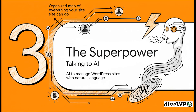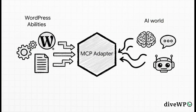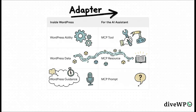So how does this all connect? Once you have this beautifully organized map of everything your site can do, you unlock a genuine superpower — the ability to have a real, meaningful conversation with an AI. This is where WordPress plugs into the future. The key piece of tech that makes this possible is called the MCP Adapter. The best way to think of it is as a universal translator. It sits right in the middle between WordPress's new organized abilities and the AI world, and it speaks both languages fluently. That adapter takes a WordPress ability and presents it to the AI as a tool it can use, translating your WordPress data into a resource that AI can process for context. This seamless conversion lets an AI assistant — like Claude or Cody — look at your website's functions as if they were its own native tools.